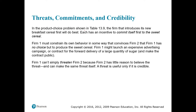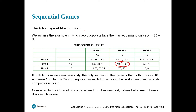In the product choice problem, the firm that introduces a new breakfast cereal first will do best. Each has an incentive to commit itself to the sweet cereal. A firm must constrain its own behavior in a way that convinces firm two it has no choice but to produce the sweet cereal. Firm one might launch an expensive advertising campaign or sign a contract for forward delivery of a large quantity of sugar, sticking to the decision to produce 15 rather than 10.